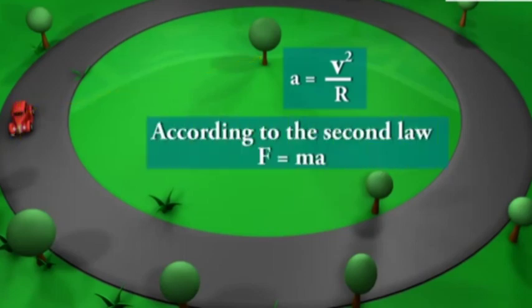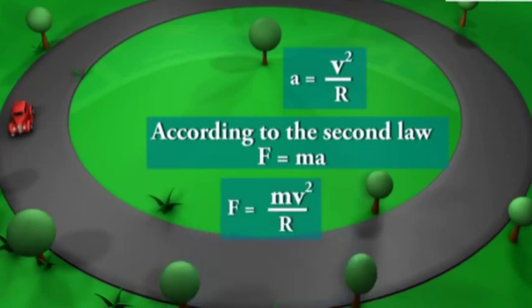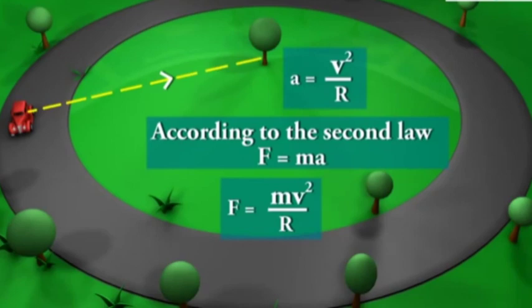According to the second law, the force F providing this acceleration is F equal to mv squared upon R, where m is the mass of the body. This force, directed towards the center, is called the centripetal force.